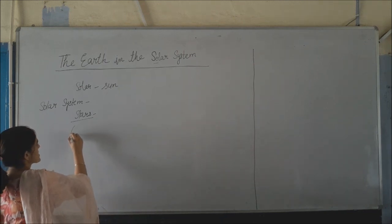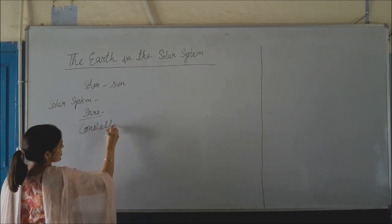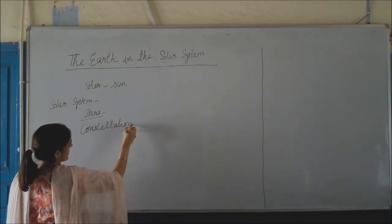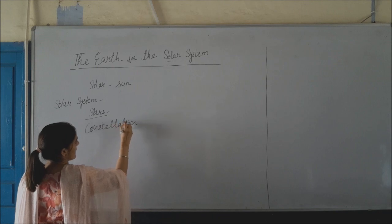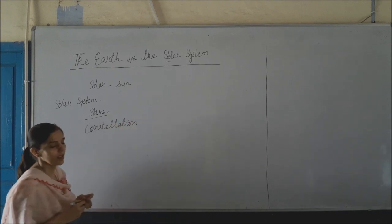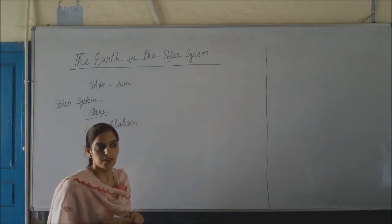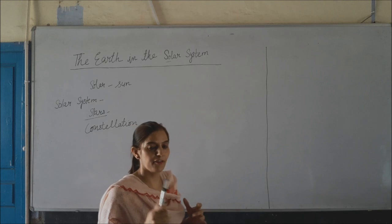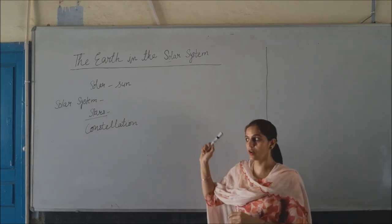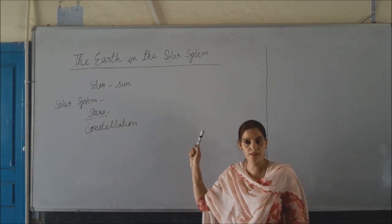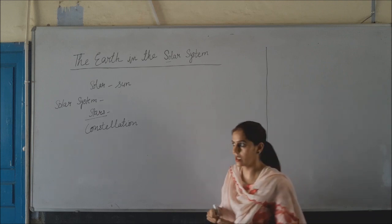Next comes the constellation. What is a constellation? A constellation is a pattern. Stars form patterns in the night sky, and these patterns are called constellations.